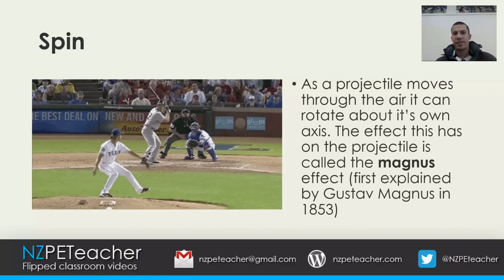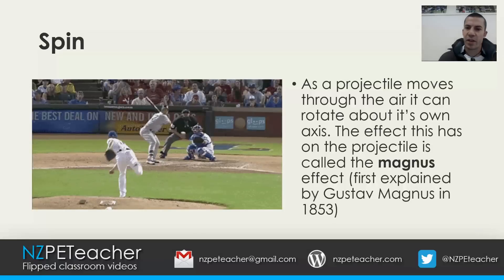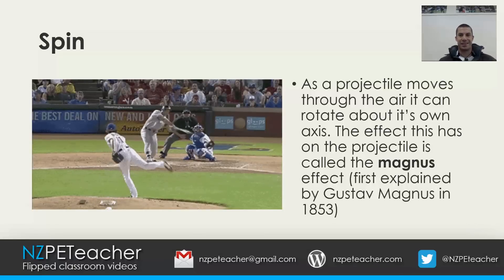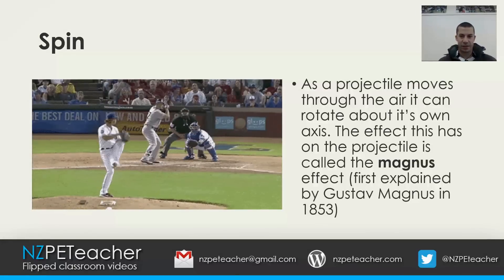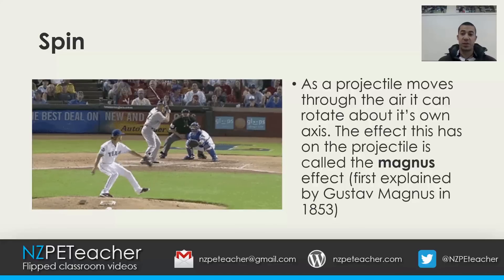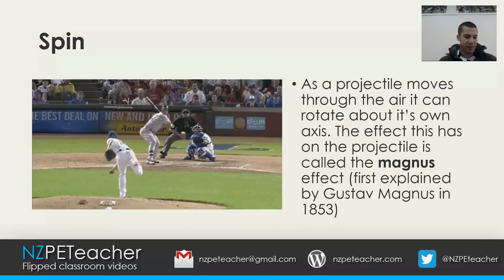As a projectile moves through the air it can rotate about its own axis. The effect this has on the projectile is called the Magnus effect. This effect was first explained by Gustav Magnus in 1853.